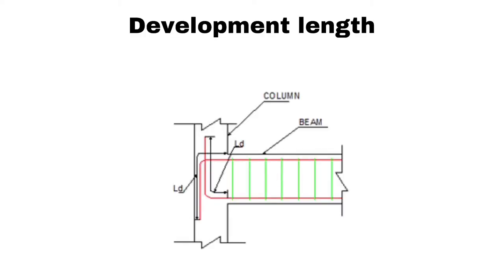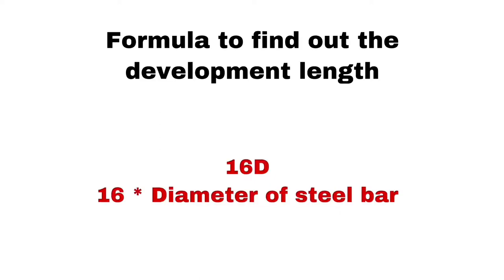Now we will see something about development length. To make grip between steel and concrete, we should provide development length. It makes continuous structure and transfers the stress into the concrete. Normally development length is 16D. If you use 10mm diameter of steel, you should provide 16 into 10. Here 160mm is your development length.